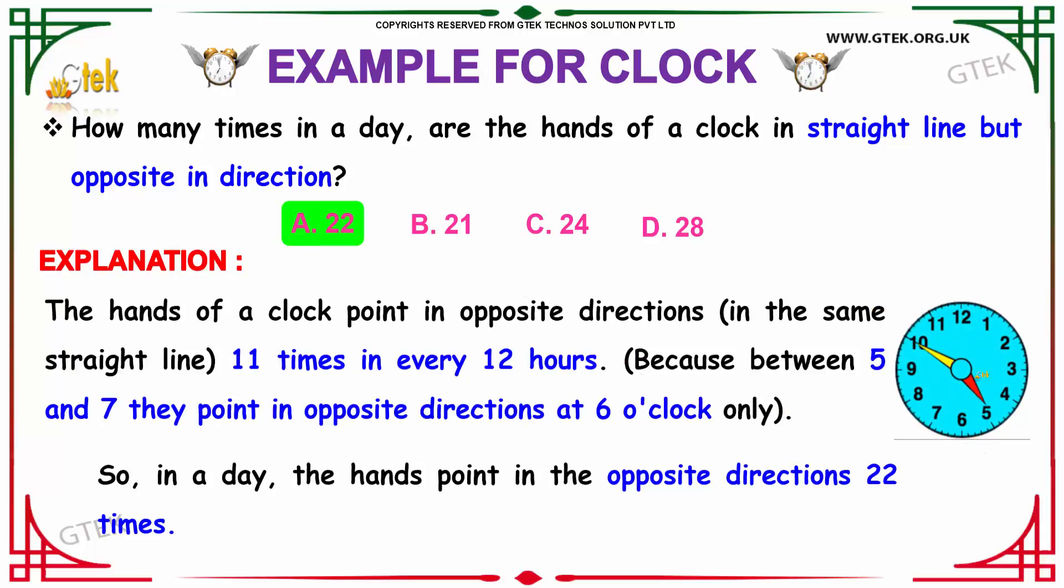The hands of a clock will be in opposite direction 11 times in every 12 hours. Because between 5 and 7 they point in opposite directions only at 6 o'clock.